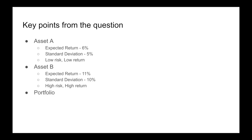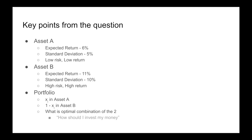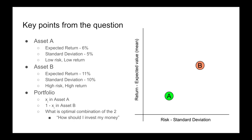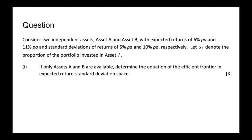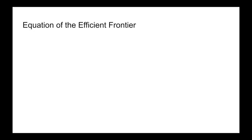We want a portfolio where we have Xi in asset A and 1 minus Xi in asset B, looking for the optimal combination of these two assets — essentially answering how should I invest my money. You can visually represent this on a graph in mean-standard deviation space, where A is low risk/low return and B is high risk/high return. Part I of the question says: if only asset A and B are available, determine the equation of the efficient frontier in the expected return standard deviation space.